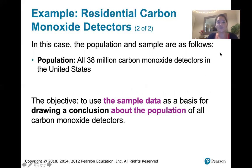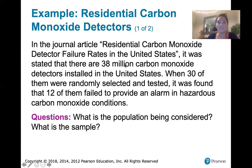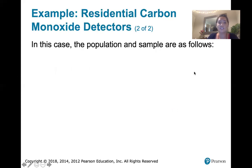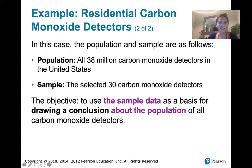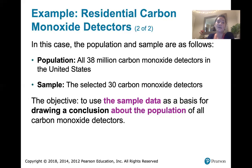In this case, the population and sample are as follows. The population is the 38 million carbon monoxide detectors in the United States — that includes all of them. But rather than taking measurements on all 38 million, we're going to take measurements on 30 of them. Those 30 randomly selected ones are our sample. Our objective is to use sample data as the basis for drawing a conclusion about the entire population — we are interested in all 38 million carbon monoxide detectors in the United States.